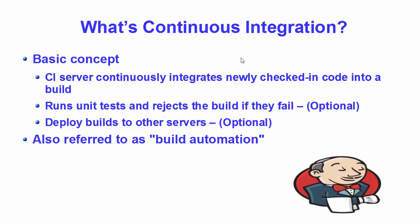Continuous integration is also referred to as build automation. At regular intervals — ideally every commit you make in your version control system — your CI system integrates your code, meaning all changes up until that point are combined into the project. It then builds your code, compiling it into an executable or a package, runs your automated test suite, and if all previous steps are successful, your code is deployed onto a system where developers can interact with it.